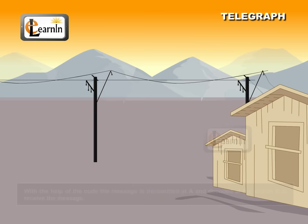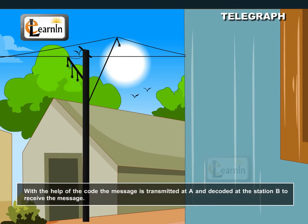With the help of the code, the message is transmitted at A and decoded at the station B to receive the message.